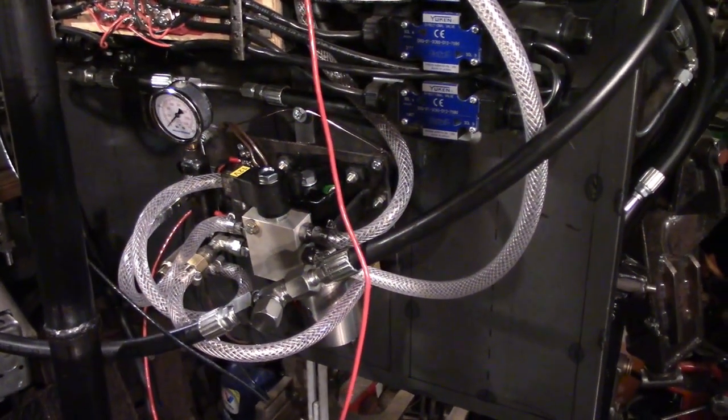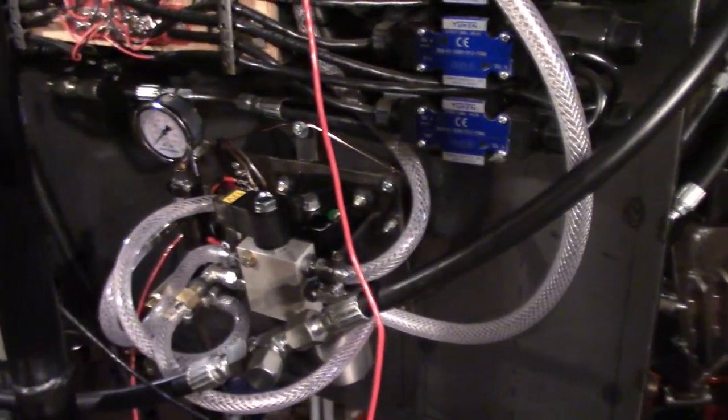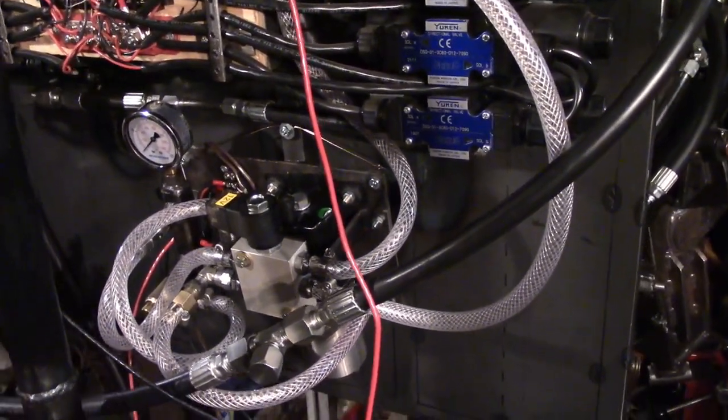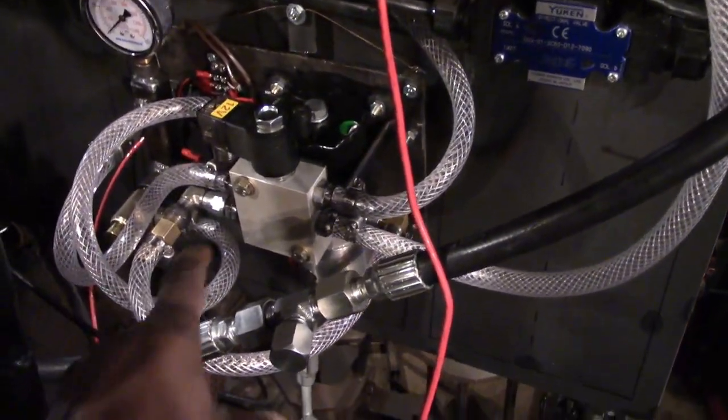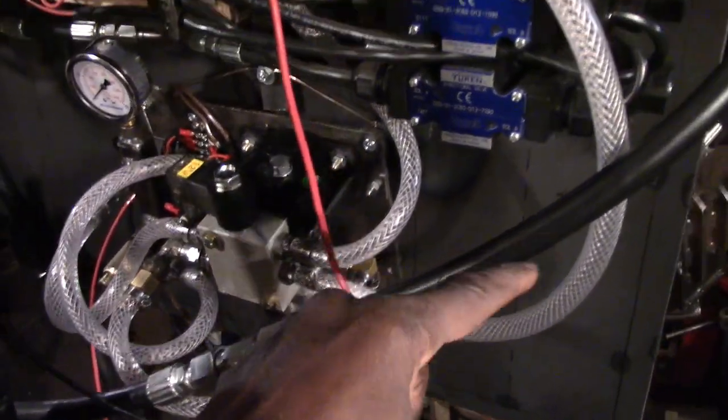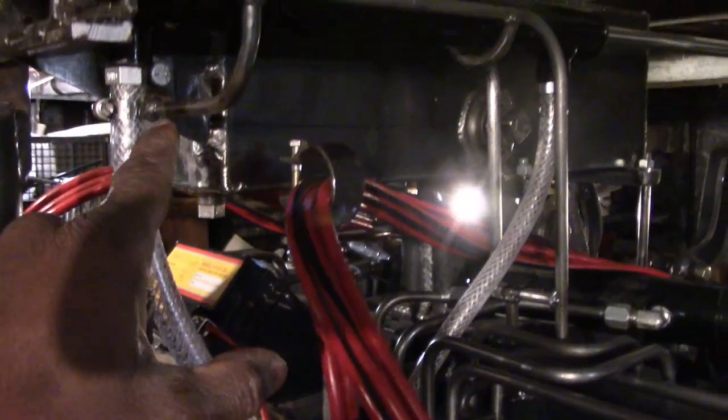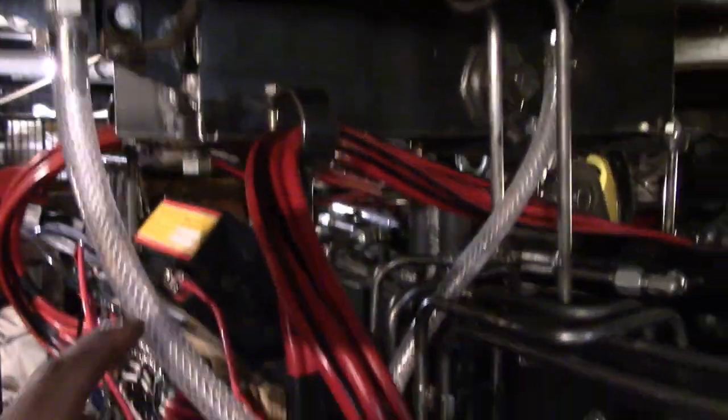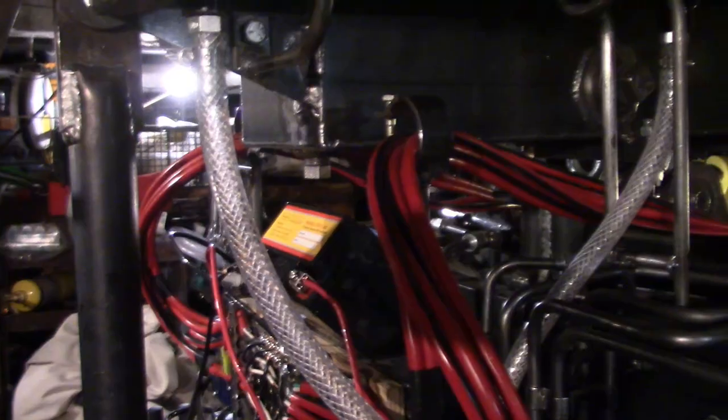There's one more thing I wanted to show you. Do you remember when I said there's air in the lines and that's why the chest armor was dropping down? Well, if we follow the lines from the solenoid up to where they go to the hydraulic cylinder which lifts and lowers the chest armor, you'll be able to see the bubbles moving through this line when the chest armor reaches the top of its range of motion.